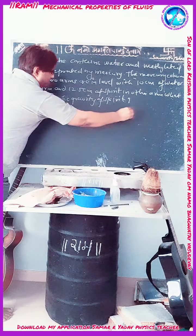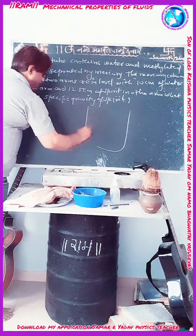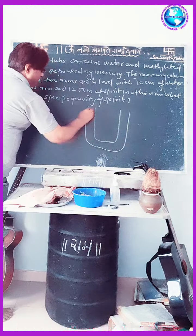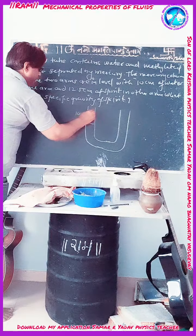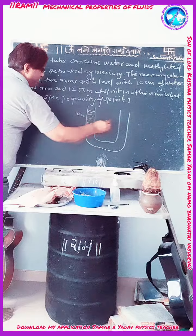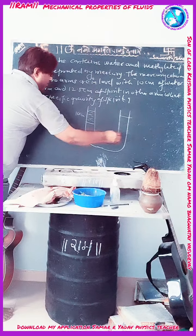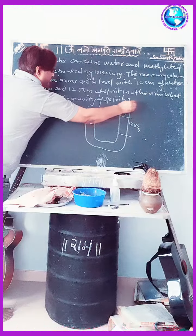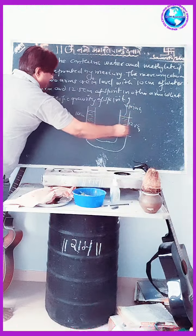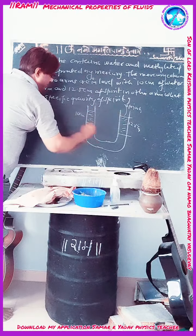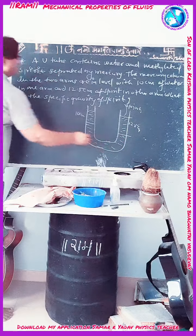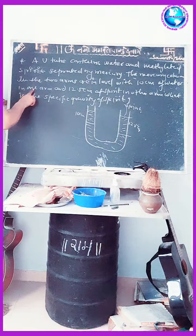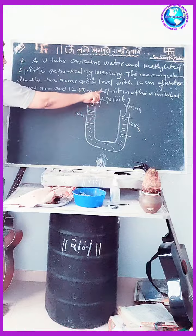Now you can see here — suppose this is a U-shaped tube. Up to 10 cm, water is filled, and up to 12.5 cm, spirit is filled, such that the mercury level will be the same in both arms. It is given that the two arms are leveled with 10 cm of water in one arm and 12.5 cm of spirit in the other arm.